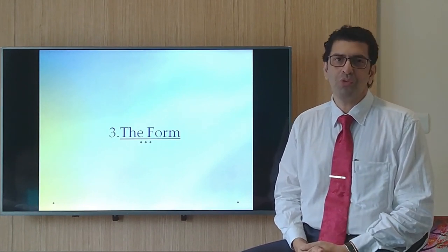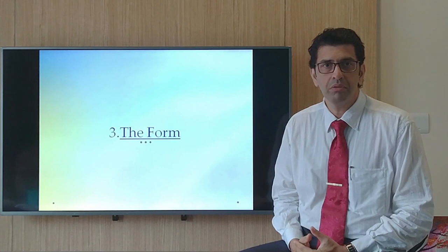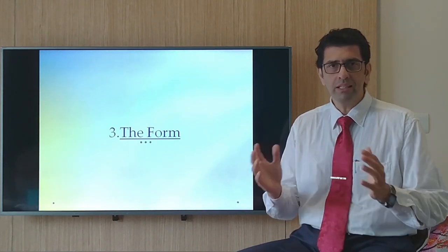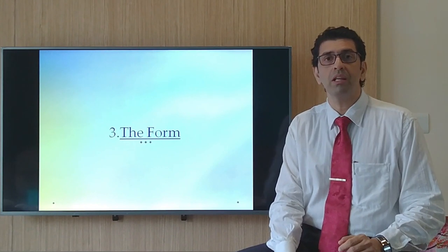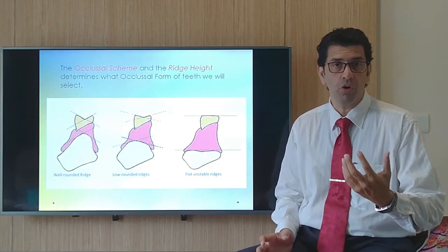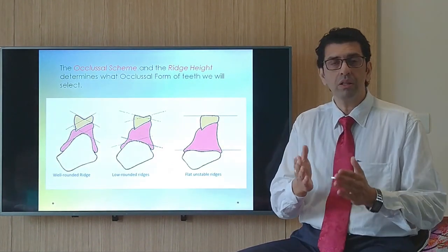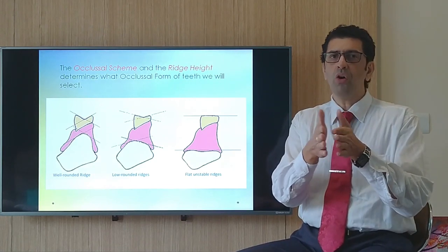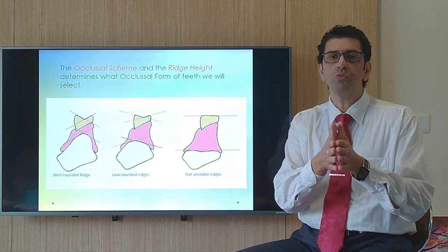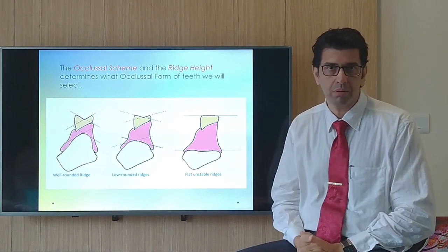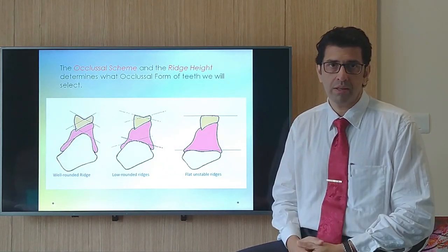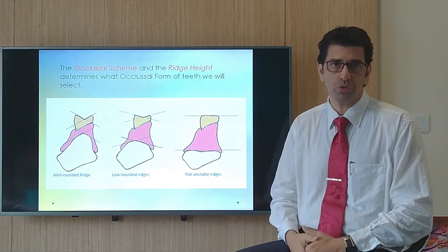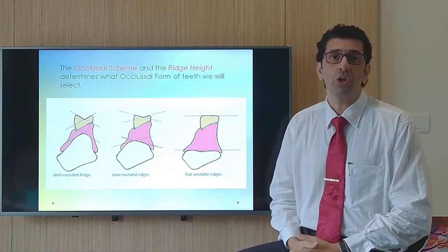The third factor is form — something we are familiar with but must choose carefully based on the patient's ridge form and the occlusal scheme planned. Whether you are planning balanced occlusion, centric occlusion, neutrocentric occlusion, or lingualized occlusion will influence the tooth form you select. The type of ridge the patient has will also dictate the posterior occlusal form.